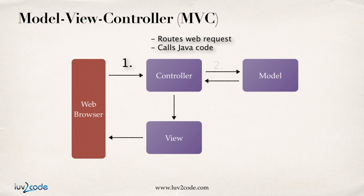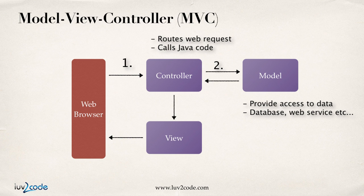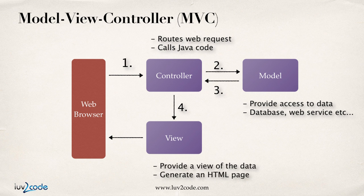The controller may also access the model. The model basically provides access to any back-end data — it may make a call to a back-end database like MySQL or Oracle, or even make calls out to a web service. The model handles retrieving or updating data from your back-end service. Once it has data from the model, the controller passes this data to the view. The view is basically a page for rendering HTML — it renders the results of a SQL query or a database insert, and that view page comes back as HTML to the web browser. So: controller routes the request, model provides access to back-end data, and the view renders an HTML response.